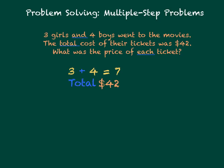We know that they spent a total of $42. What operation do we use when we know the total, but we want to find the price of each ticket? That's right, we use division. So we take the $42 and divide it between seven kids, which gives us $6. The price of each ticket was $6.